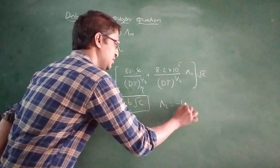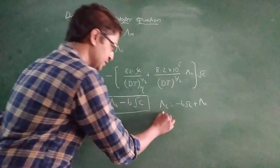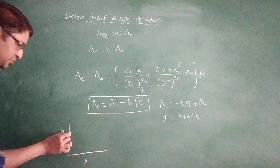Lambda C equals minus B root C plus lambda 0. Both are the same. It represents a straight line equation y equals mx plus C. You know that this one is y-axis, x-axis. It gives a straight line, a straight line equation with slope m.